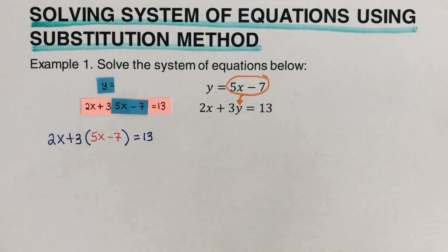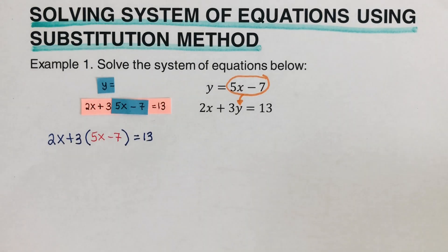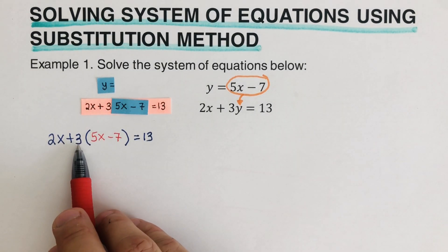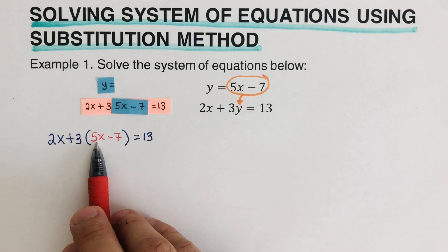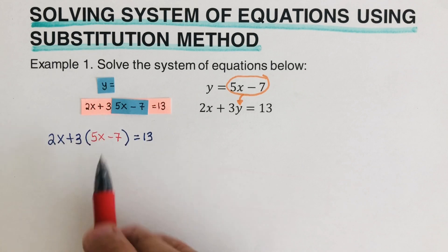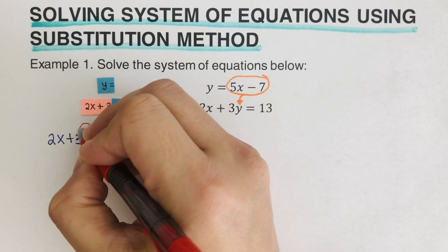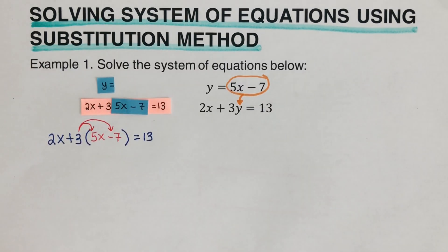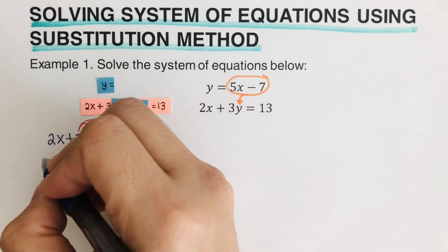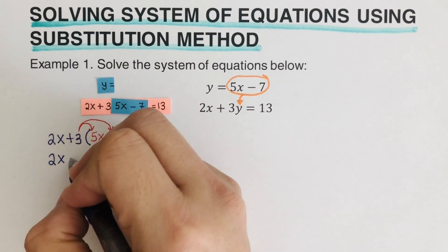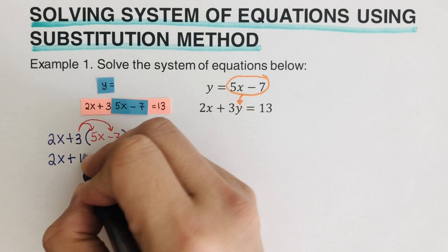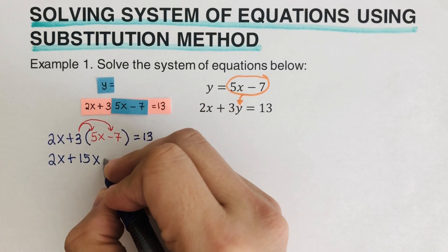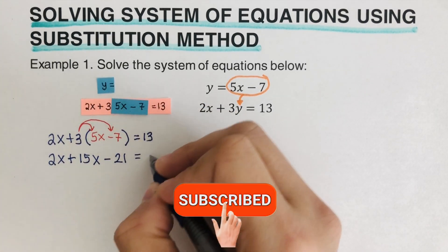The third step is to solve this new equation. From here, I can go ahead and distribute the 3 to each of the terms inside the parenthesis. Others miss this part — they only multiply the 3 to the 5. That's not the correct way to do it; it should be to both of them. So the 3 will be distributed to both terms inside the parenthesis. Our equation would come out 2x plus 3 times 5x, which is 15x, and then 3 times negative 7 is negative 21, equals 13.